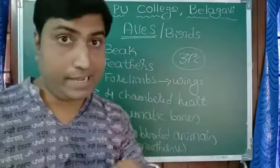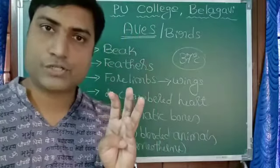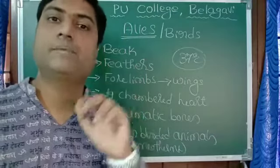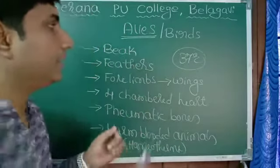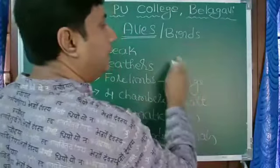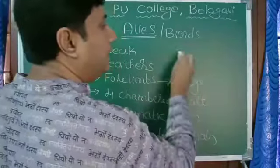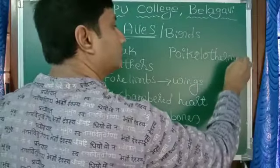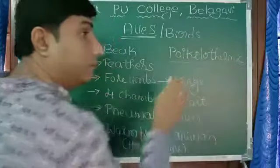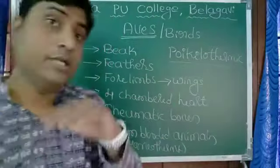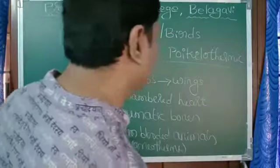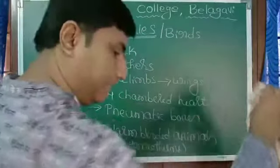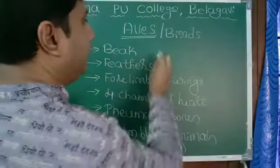That is what warm-blooded means, as in the case of birds. Whereas fishes, amphibians, and reptiles are cold-blooded, technically called poikilothermic. Their body temperature changes according to the surrounding temperature.